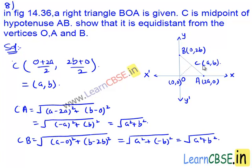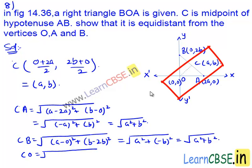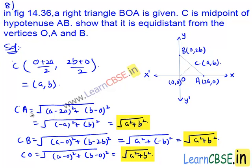Now let's find the length CO. CO equals the square root of (a minus 0) whole square plus (b minus 0) whole square, that equals the square root of a square plus b square. Here we see that CA equals CB equals CO, that equals the square root of a square plus b square units. Hence, we can say that the point C is equidistant from the vertices O, A and B.